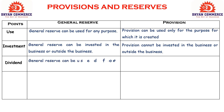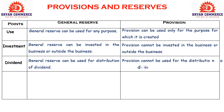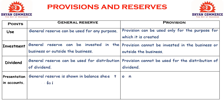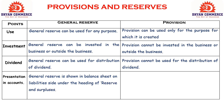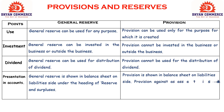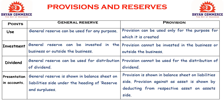Next point — Dividend. General reserve can be used for distribution of dividend; shareholder ko dividend dene ke liye company general reserve ka use kar sakti hai. Provision cannot be used for the distribution of dividend. Last point — Presentation in accounts. General reserve is shown in the balance sheet on the liability side under the heading of Reserves and Surplus. Provision is shown in the balance sheet on the liability side; provision against assets is shown by deducting from the respective assets on the asset side.